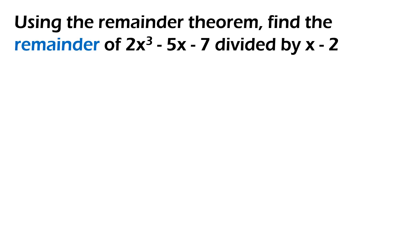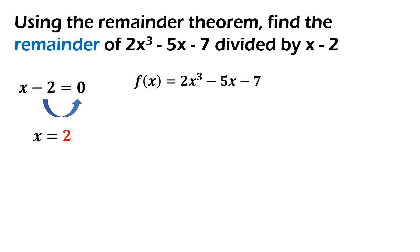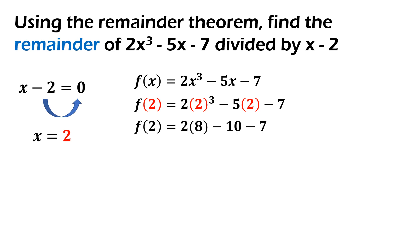Example number 3. Using the remainder theorem, let's look for the remainder of this polynomial: 2x cubed minus 5x minus 7 and its divisor x minus 2. Using the divisor x minus 2, equal natin yun sa 0, transpose, value of x will be equal to positive 2. Sa polynomial function, replace all x with positive 2. Then, solve natin lahat ng may exponents muna. So, 2 cubed will be equal to 8. Then, 5 times 2 is 10 minus 7.